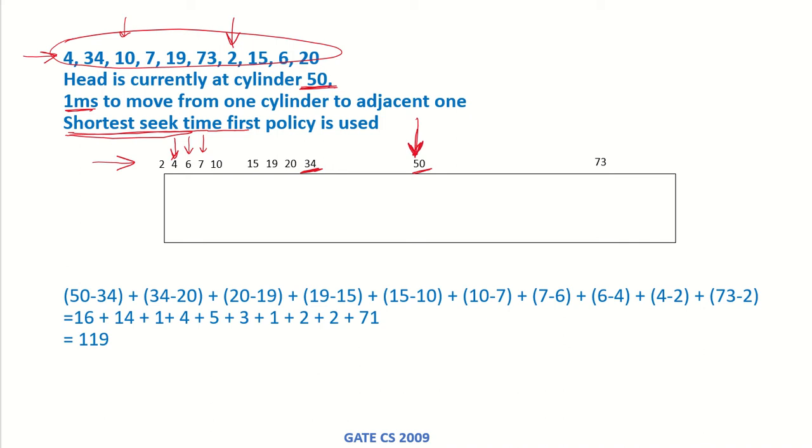If we check the shortest seek time, then 50 minus 73 would be 23 and 50 minus 34 would be less. So that means from here first the head will go here. This is the shortest seek time that will be required. From 34, if we check the next request, the shortest seek time would be 20. So from 34 it will go to 20, then to 19, then to 15, then to 10, 7, 6, 4 and 2.